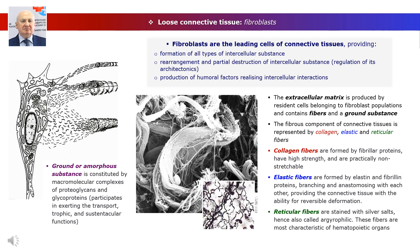The extracellular matrix is produced by resident cells belonging to fibroblast populations and contains fibers and a ground or amorphous substance. The fibrous component of connective tissues is represented by collagen, elastic, and reticular fibers. Collagen fibers are formed by fibrillar proteins, have high strength, and are practically non-stretchable. They bundle together defining the architecture and mechanical properties of connective tissue. There are 29 types of collagen, but 90% of all collagen in the human body is represented by type 1 collagen.